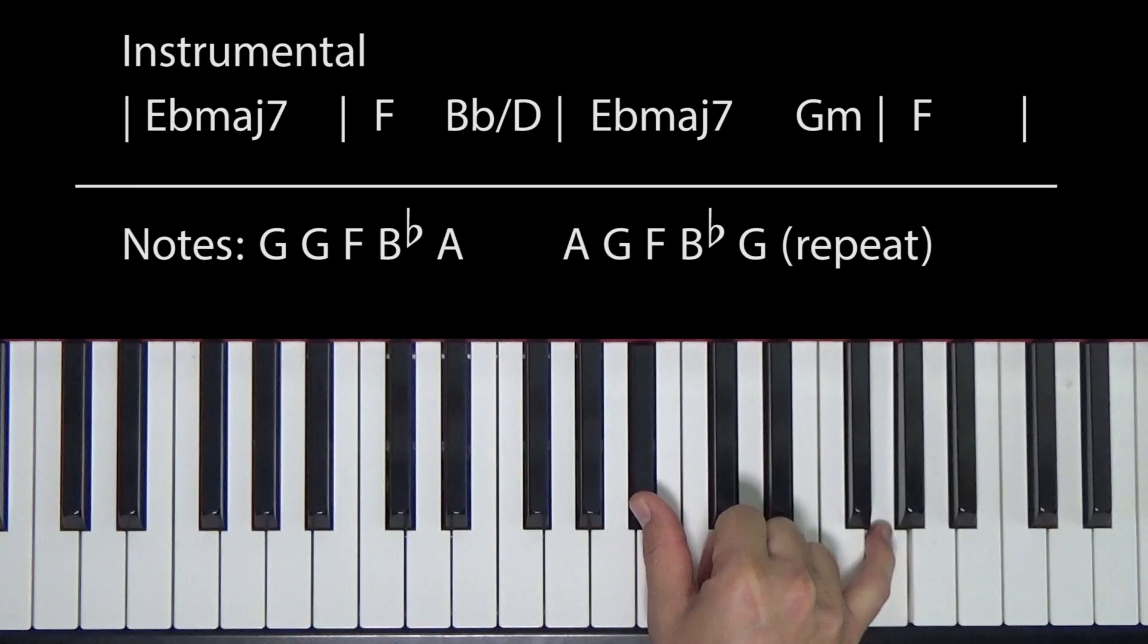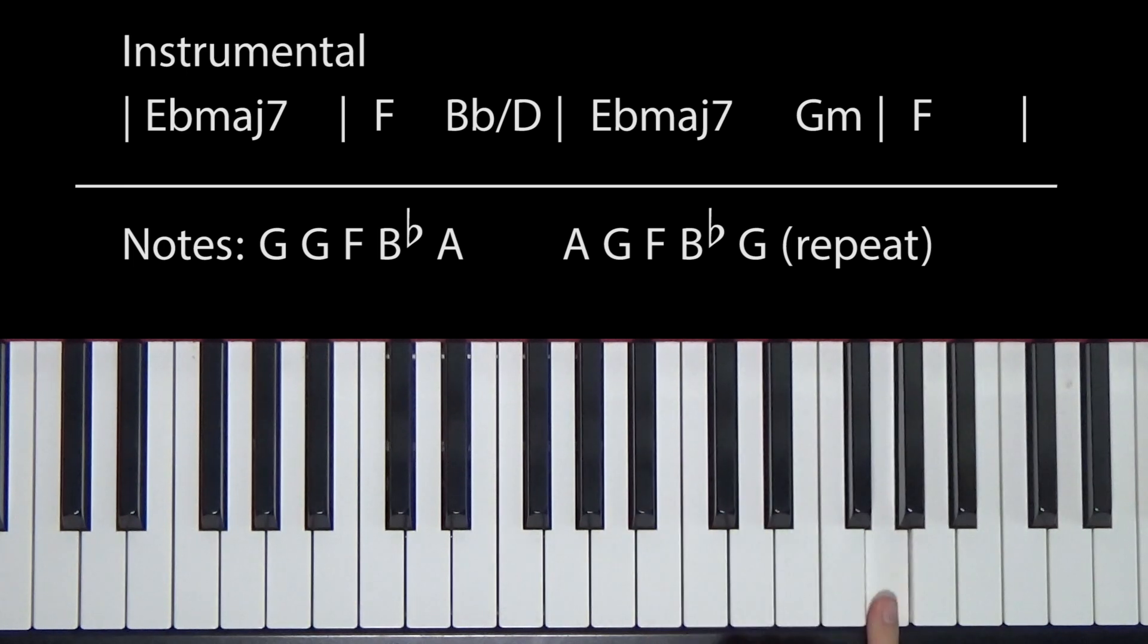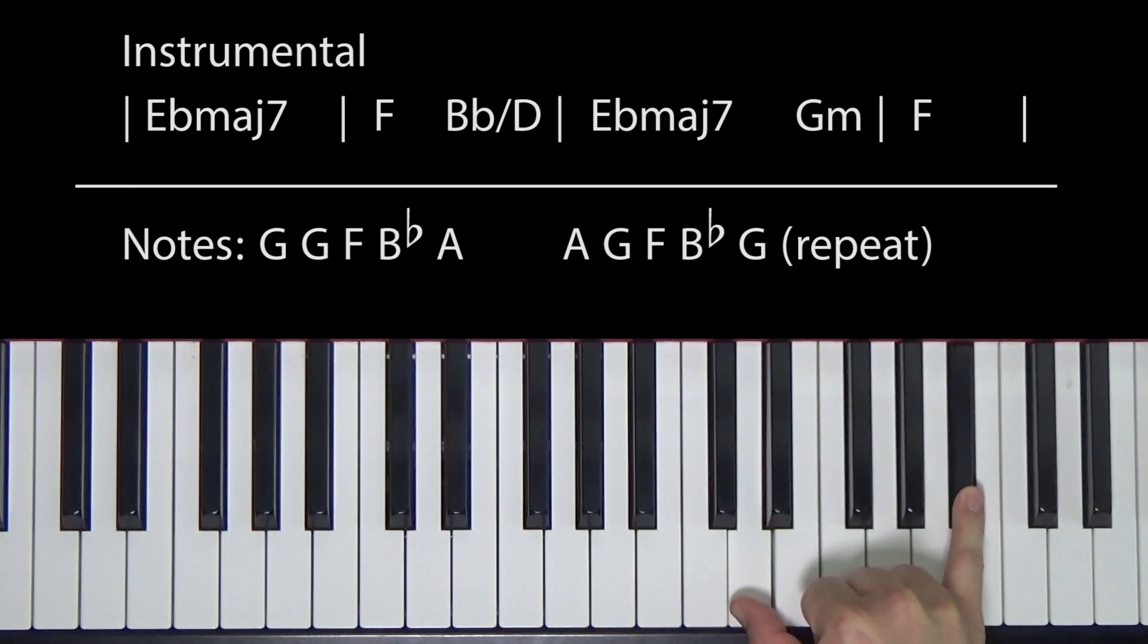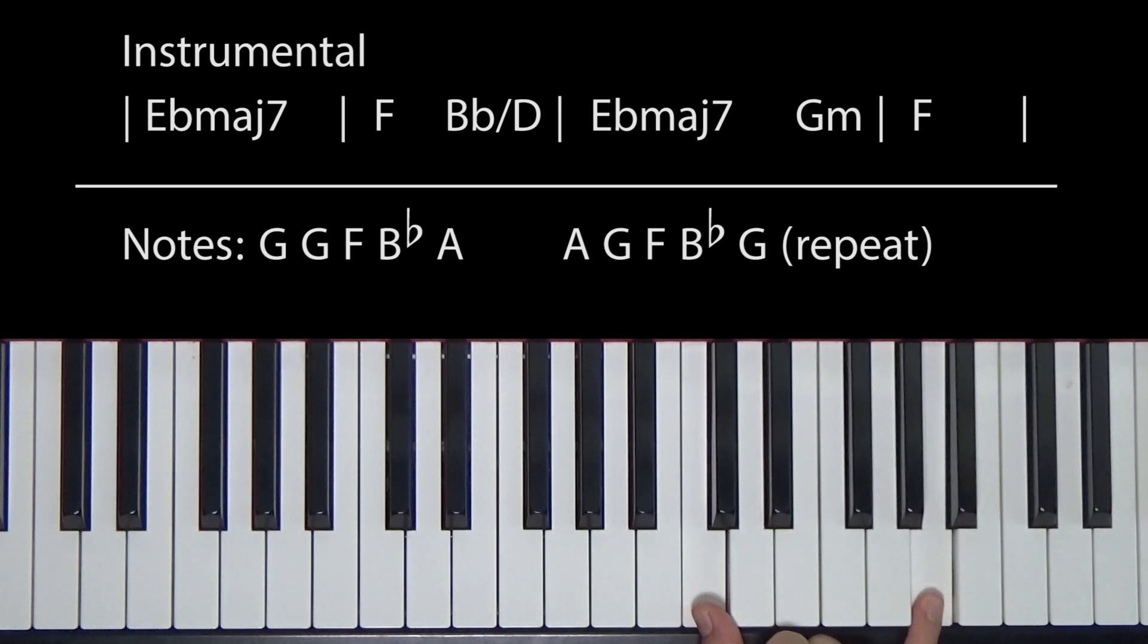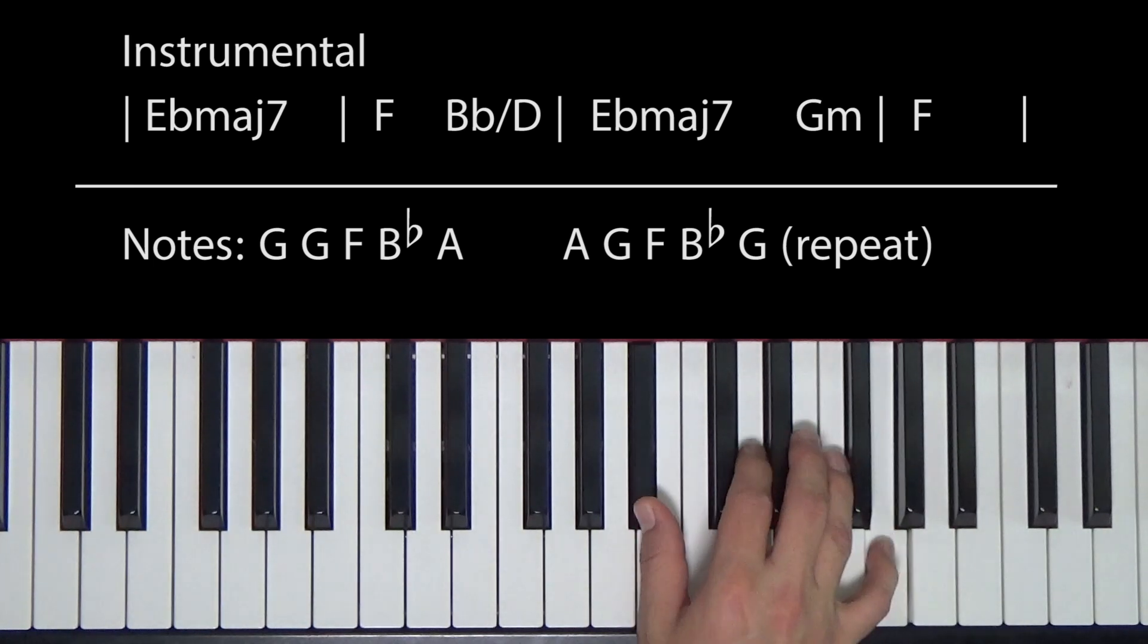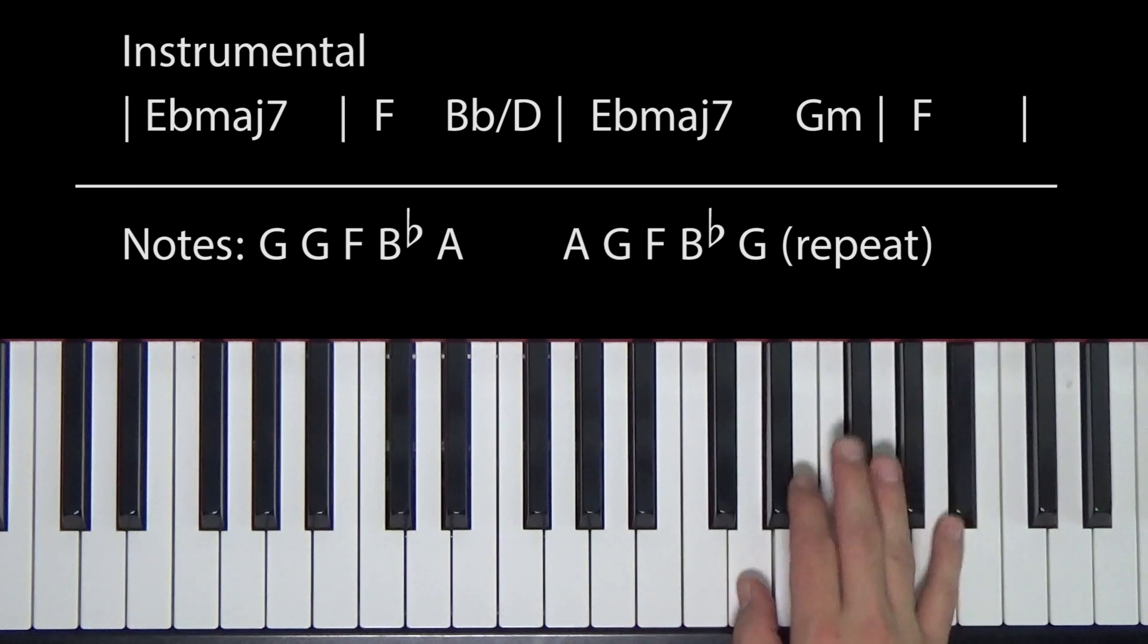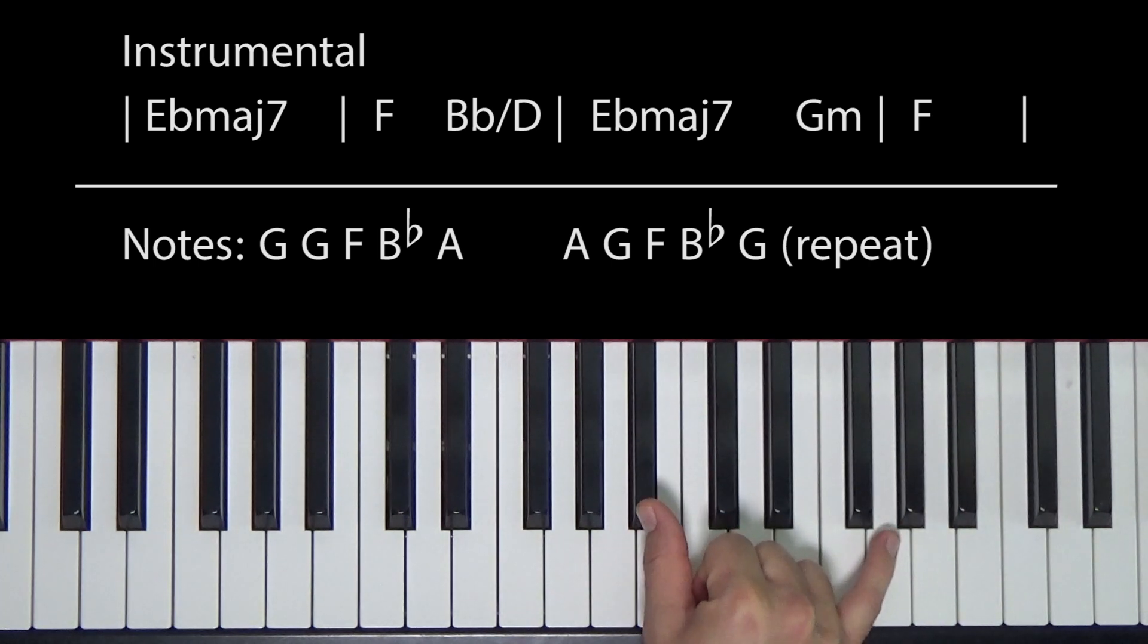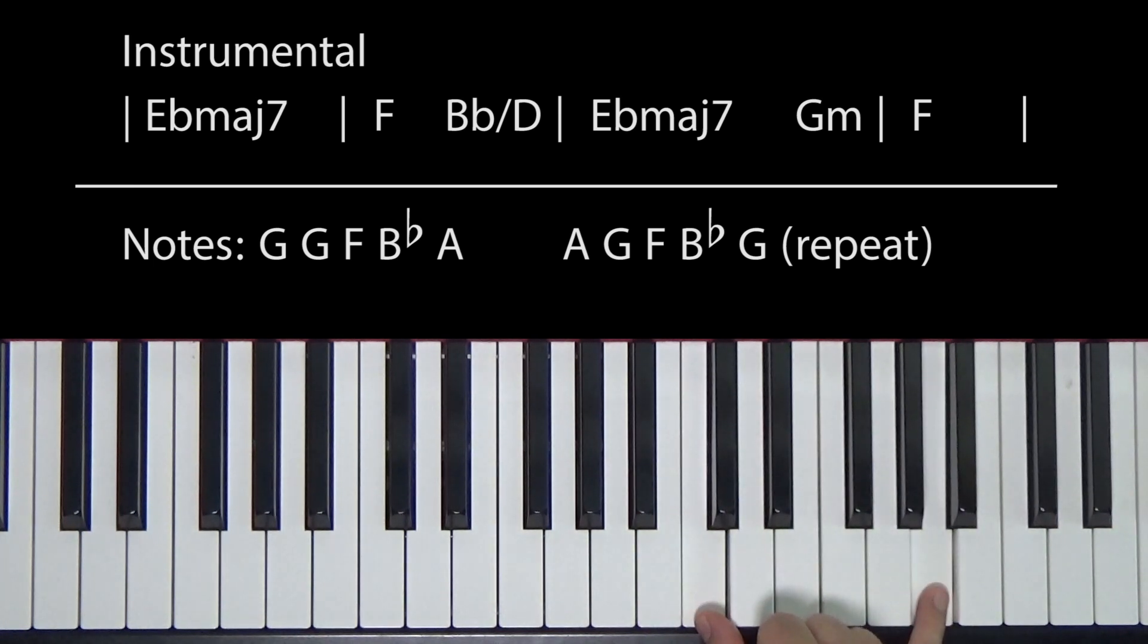So G at the top, B flat. And you'll play F and B flat. Then jump up to D and B flat. Then C and A. So that's the first measure. Two, three, four, one.